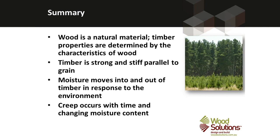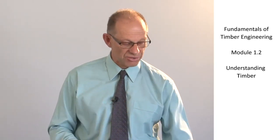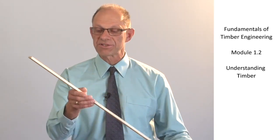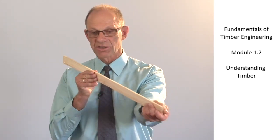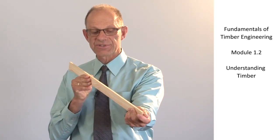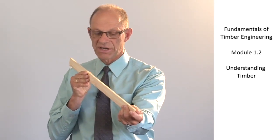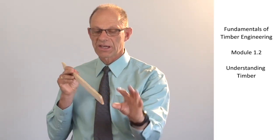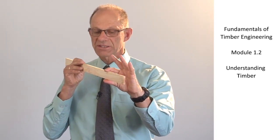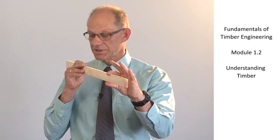So in summary, wood is a natural material and wood is the basis of timber products. Timber properties are determined by the way the wood cells behave under load. Timber is strong and stiff parallel to the grain. So if we take a piece of timber and load it parallel to the grain that gives us a great deal of strength and a great deal of stiffness. On the other hand loading it perpendicular to the grain has lower strength and lower stiffness.